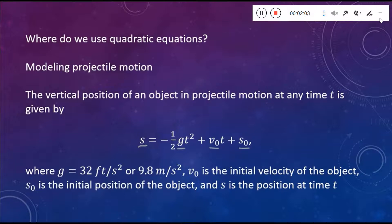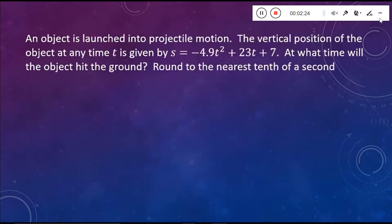And then s is the position at any time t. Yes, g is the gravitational constant. Yep, just based on whether you measure it in feet per second squared or meters per second squared, you do get a slightly different value here.